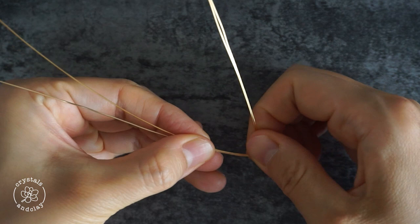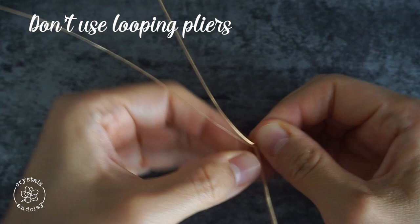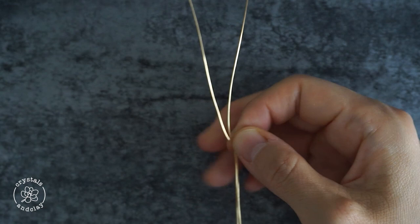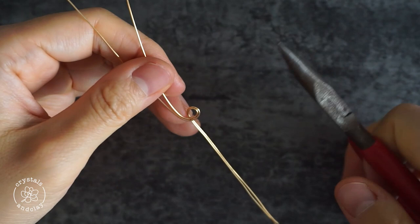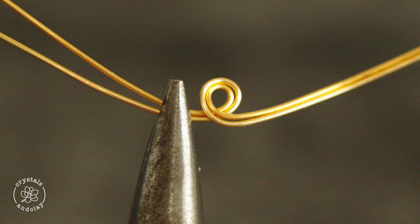Since we are dealing with two wires at the same time, I don't recommend using the looping plier. It will mess up the position of the two wires. When you get the basic shape of the loop, use a chain nose plier to hold the loop and make it smaller by moving one end of the wire. The end result should look like this.